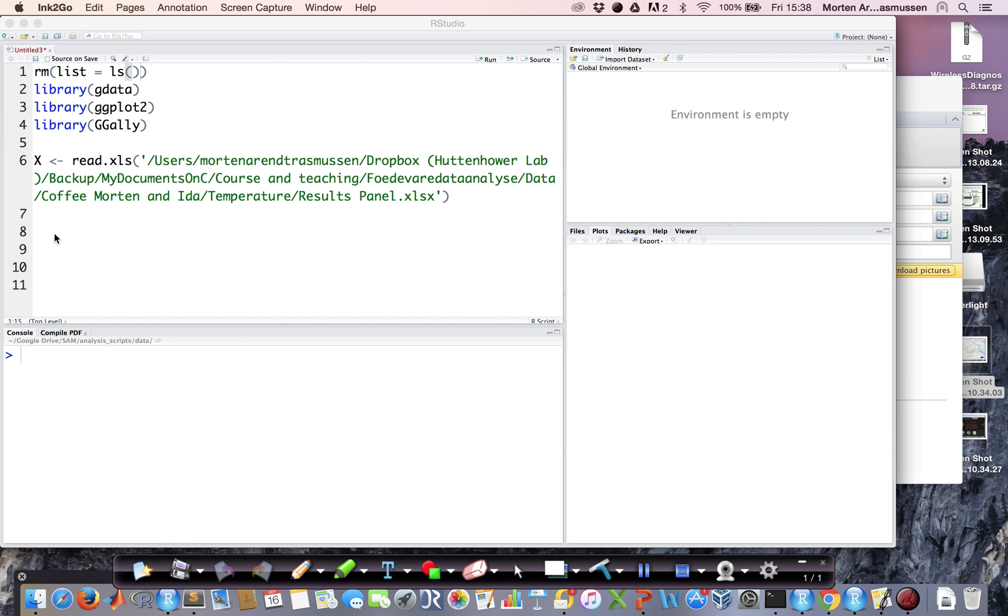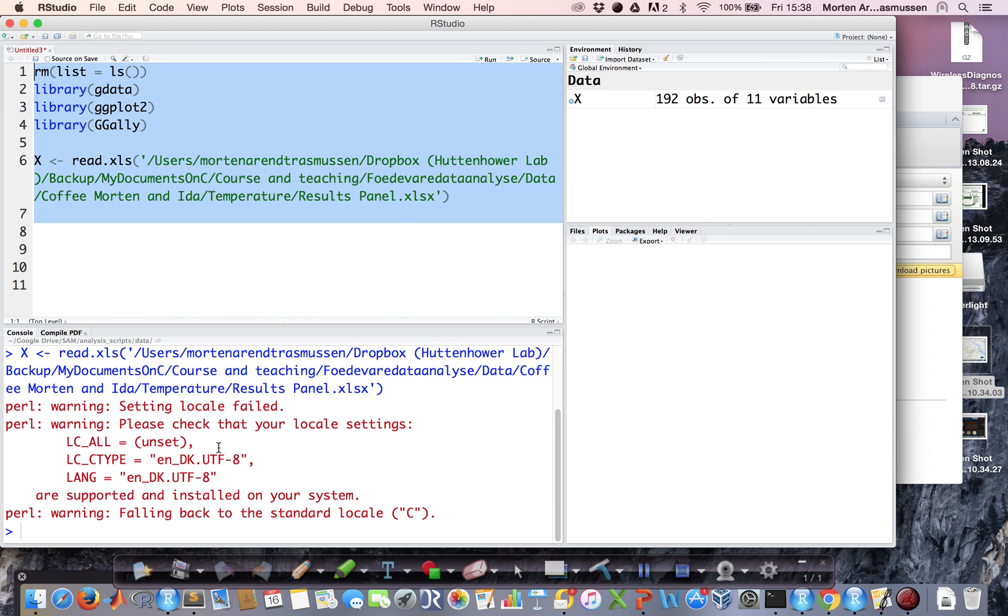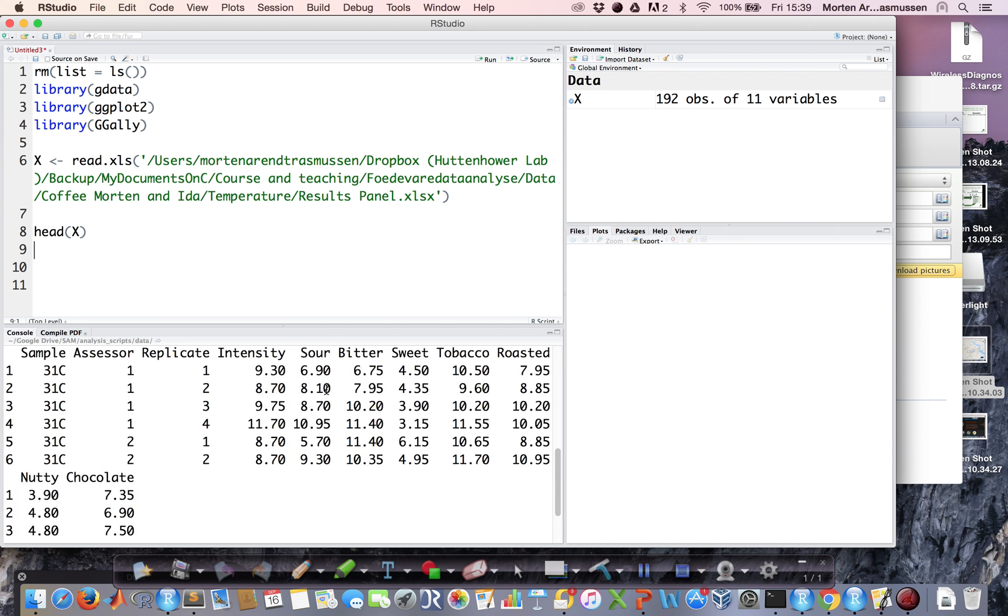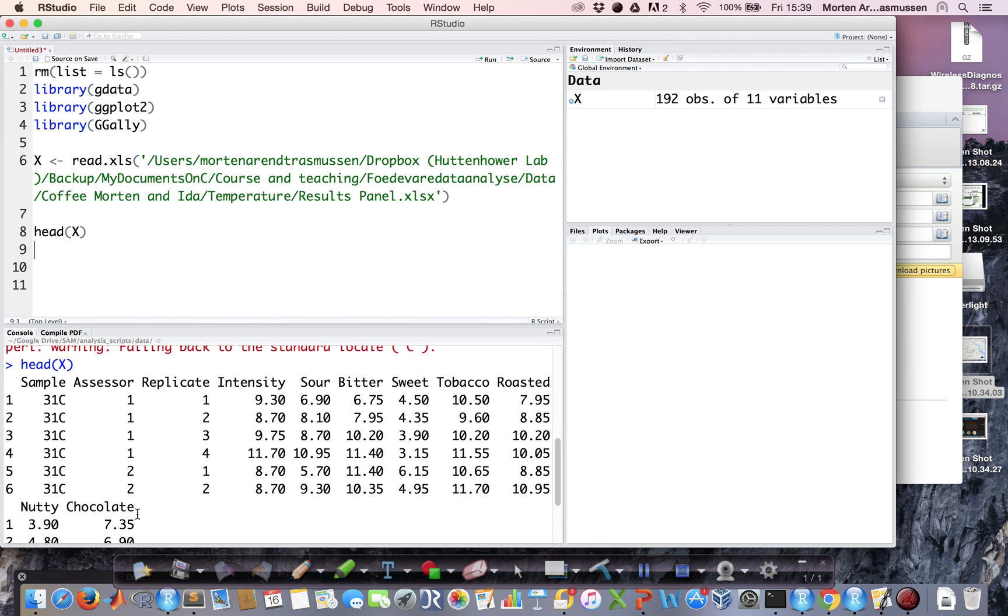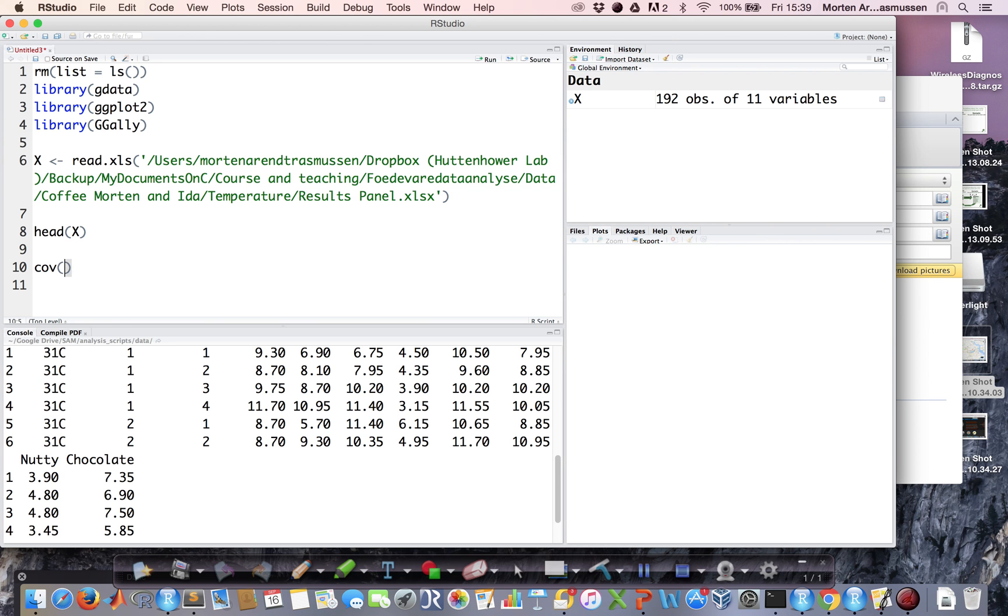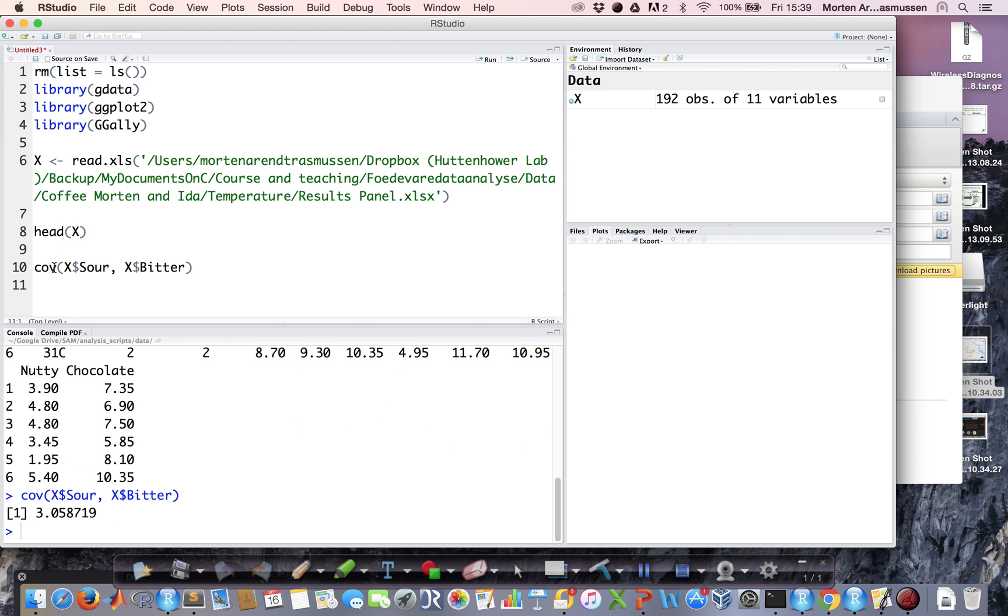Let's see how this is done in R. Here I have a bunch of data, some coffee samples. There are 192 coffee samples and 11 variables. Let's start by looking at the data. We have some design variables, sample, assess and replicate, and then the response variables from column 4 forward. If I want to calculate the covariance between any two variables, I can use the command cov and enter the two variables, for instance sour and bitter, and I'll get the covariance. If I change this to cor, I will get the correlation coefficient between these two variables.